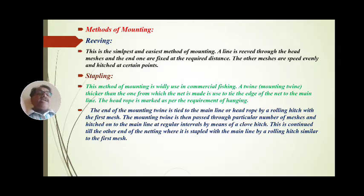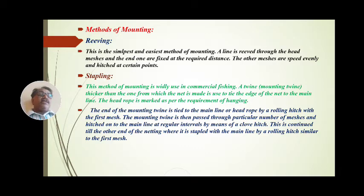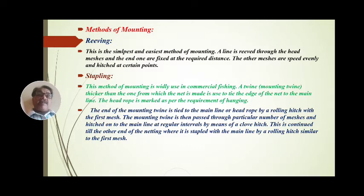A line is reeved through the head meshes, and the end ones are fixed at the required distance. The other meshes are spaced evenly and hitched at certain points. That method is called the ribbing method.